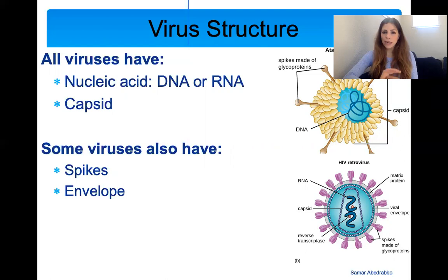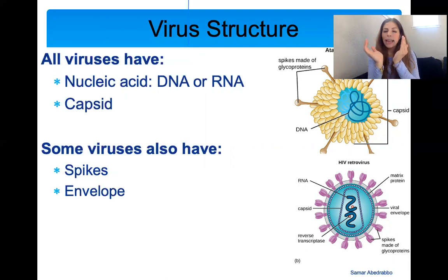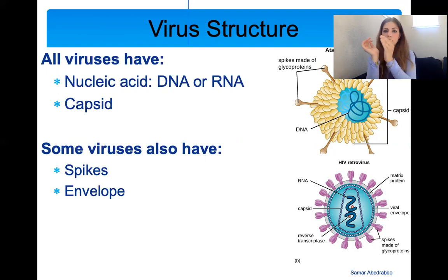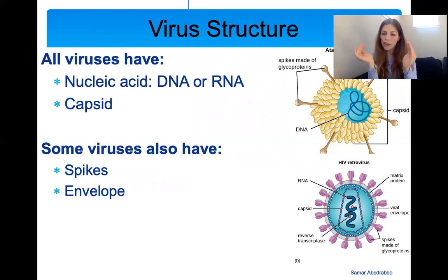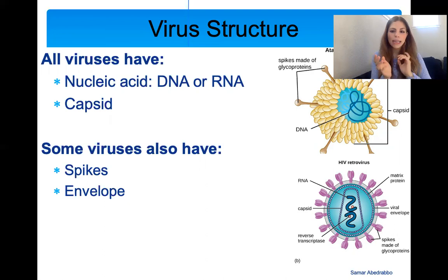When we look at the structure of viruses, because they're not living, they have a relatively simple structure. All viruses have a protein coat called a capsid, and inside there is nucleic acid — either DNA or RNA. Some viruses additionally have spikes, which are little projections outside the capsid, or they have an envelope, which is an extra layer of protection outside the capsid. That's why we call some viruses DNA viruses and some RNA viruses. Here's a simple picture showing a DNA virus and an RNA virus — this is the HIV virus.